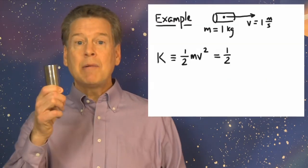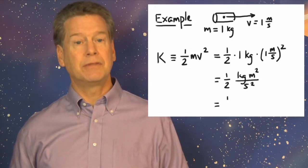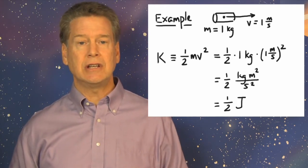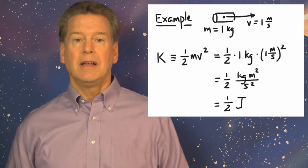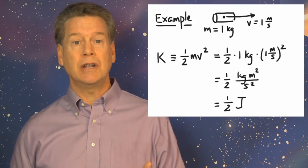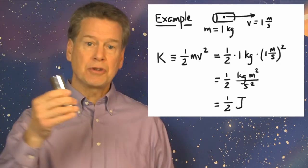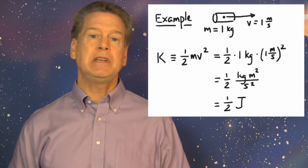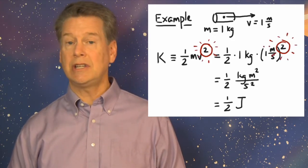A 1 kg object moving at 1 m per second, ordinary walking speed, has one-half joule of kinetic energy. Notice that the V in the formula for kinetic energy is speed, not velocity. Direction is not involved. This will remind us that kinetic energy, like all energies, is not a vector quantity. Our 1 kg object has exactly the same energy whether it moves to the right at 1 m per second or to the left at 1 m per second. And notice that the speed V